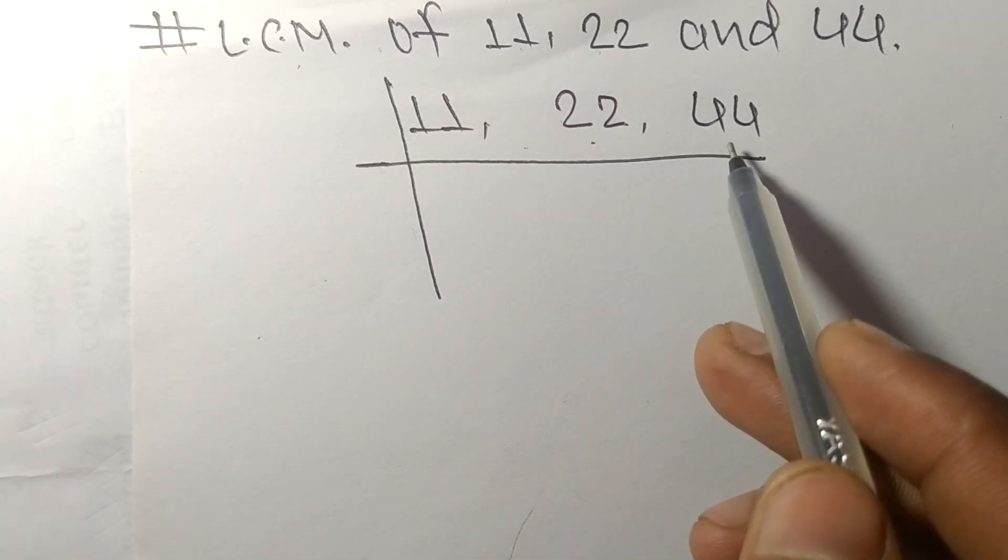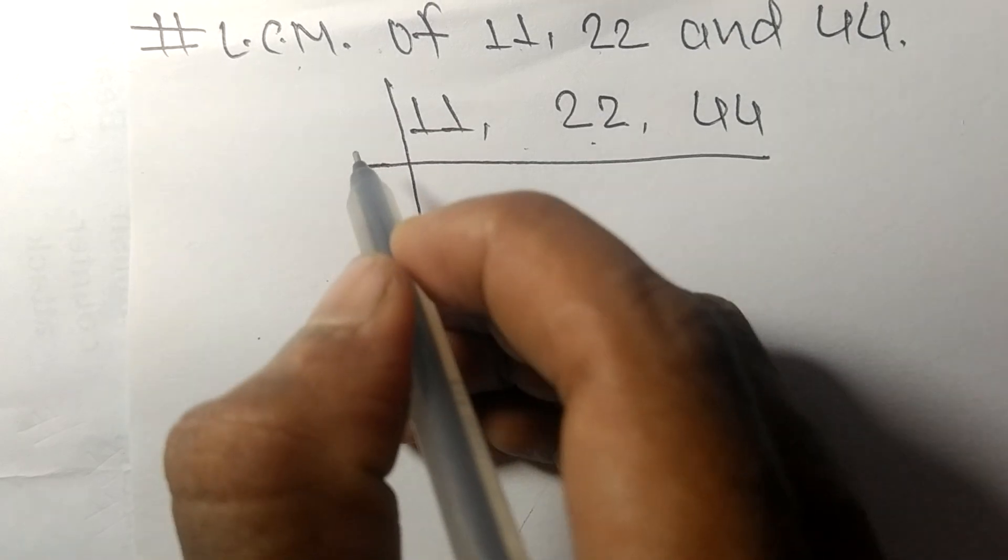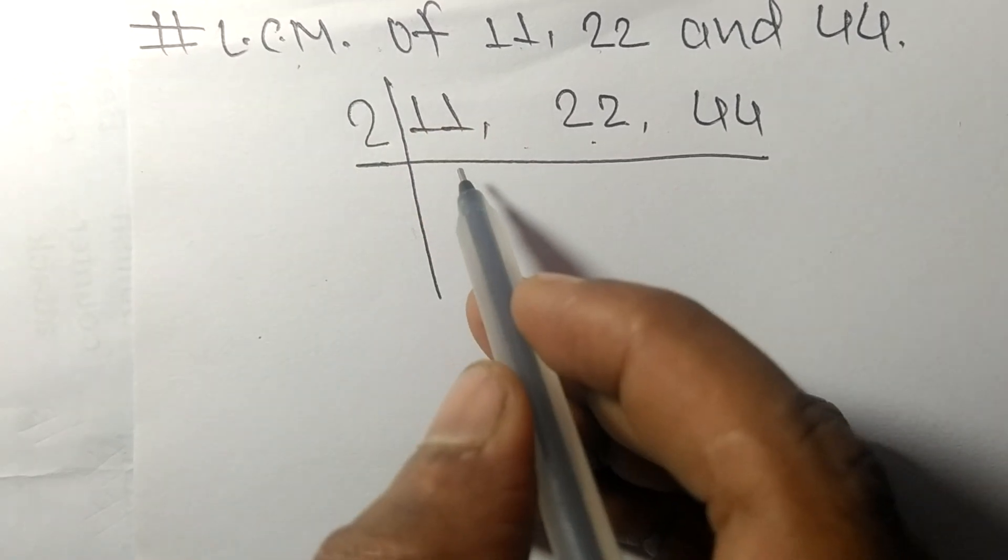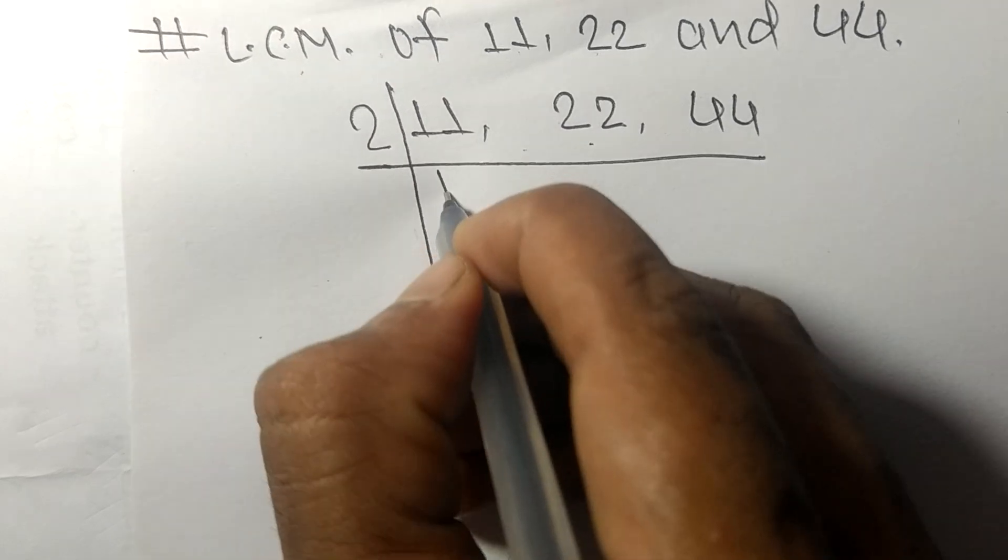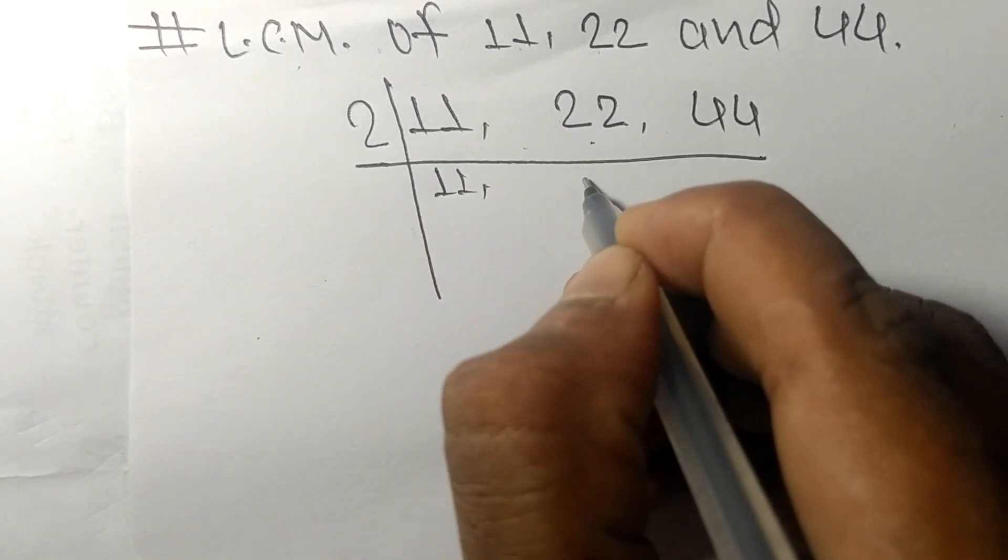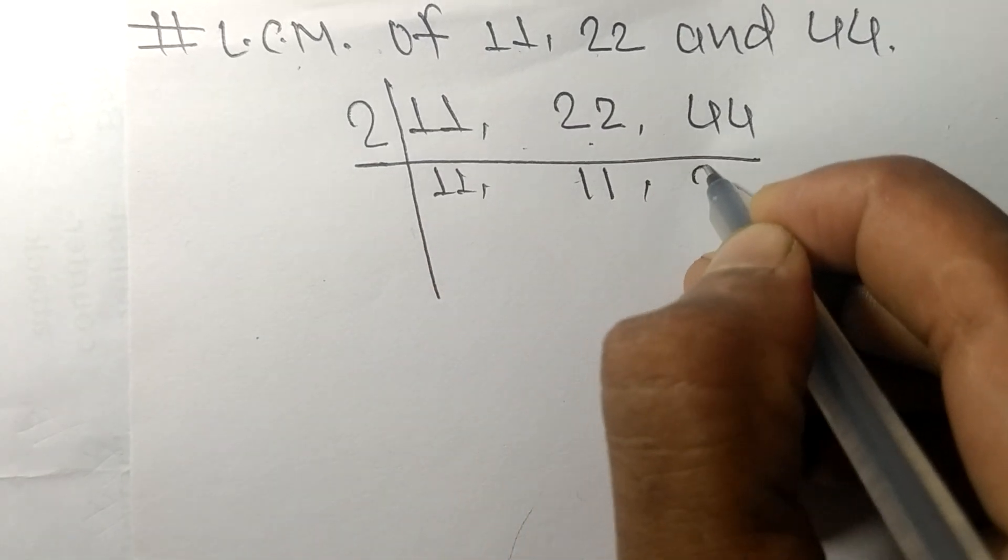22 and 44 are exactly divisible by 2. 2 times 11 equals 22, 2 times 22 equals 44.